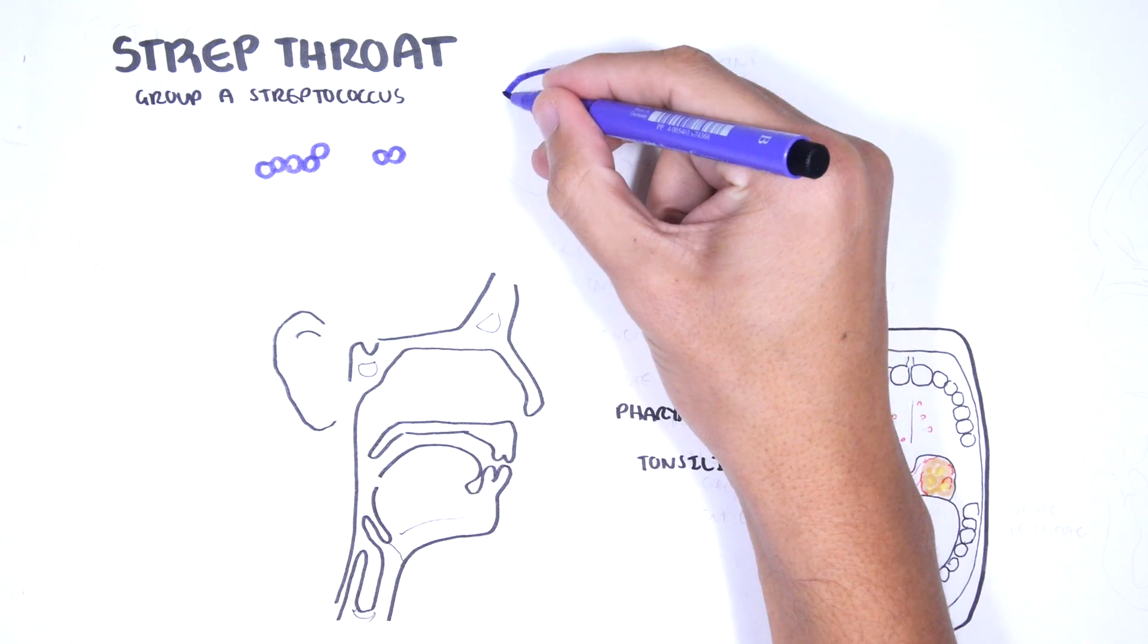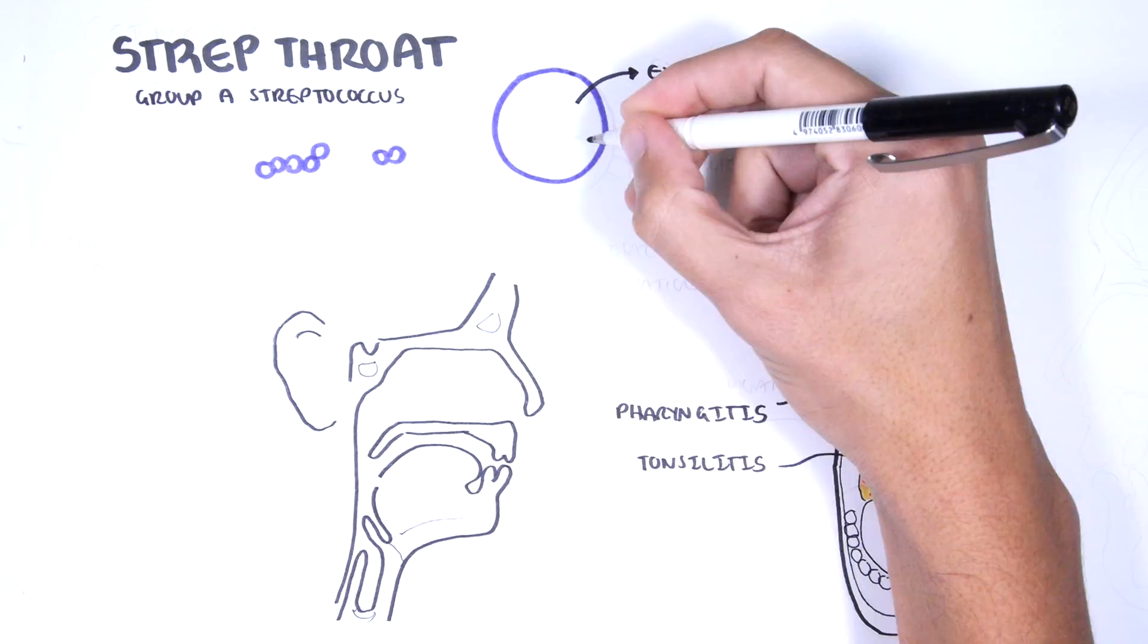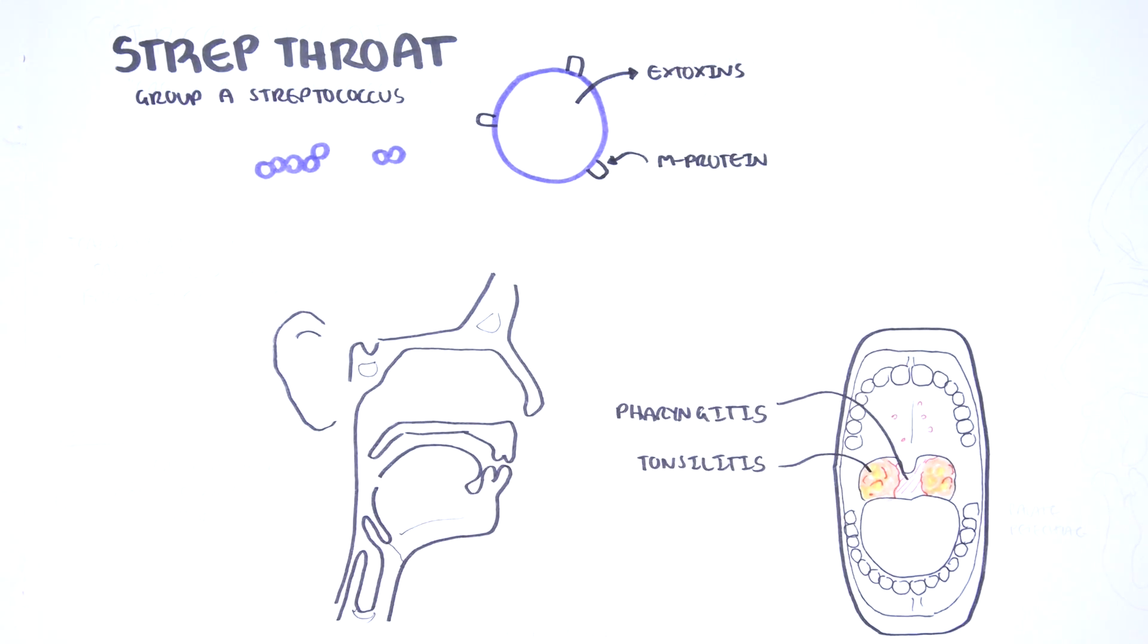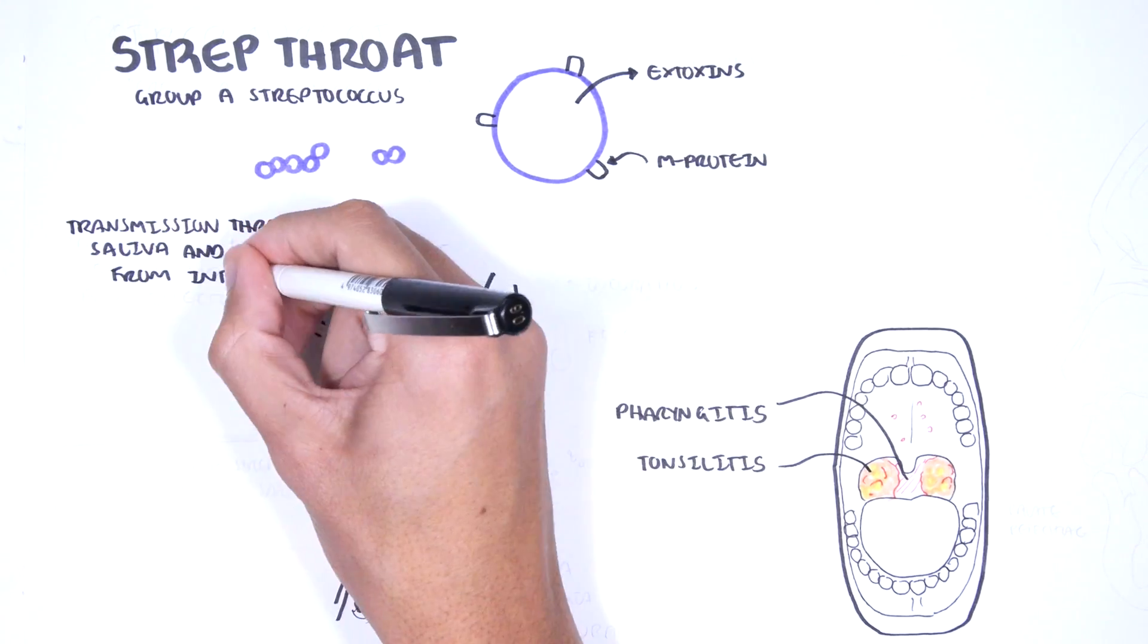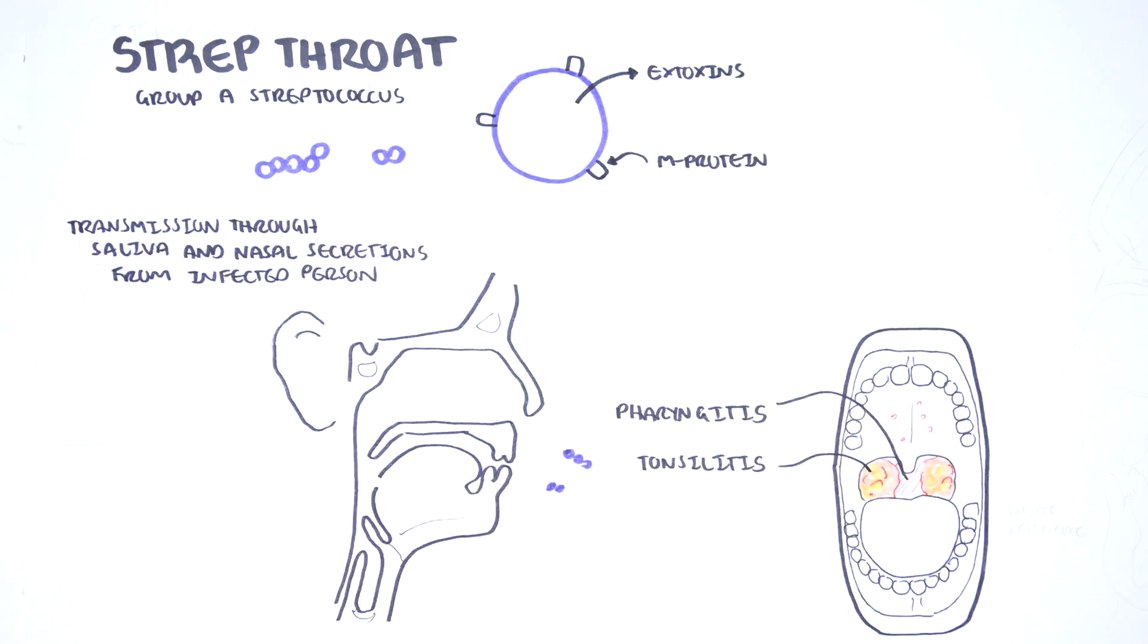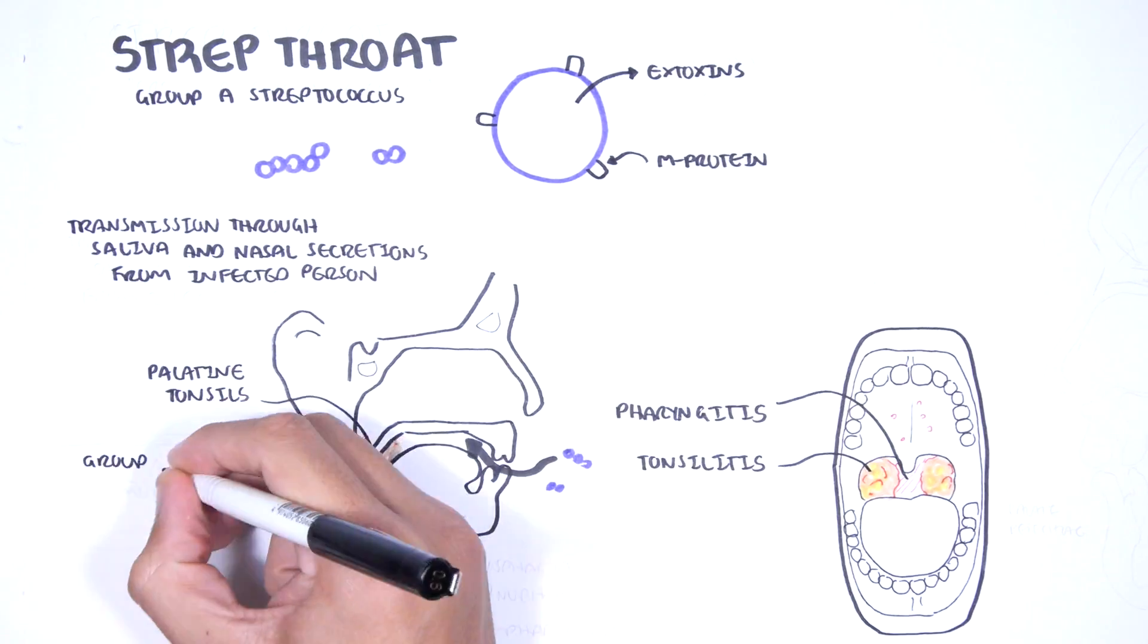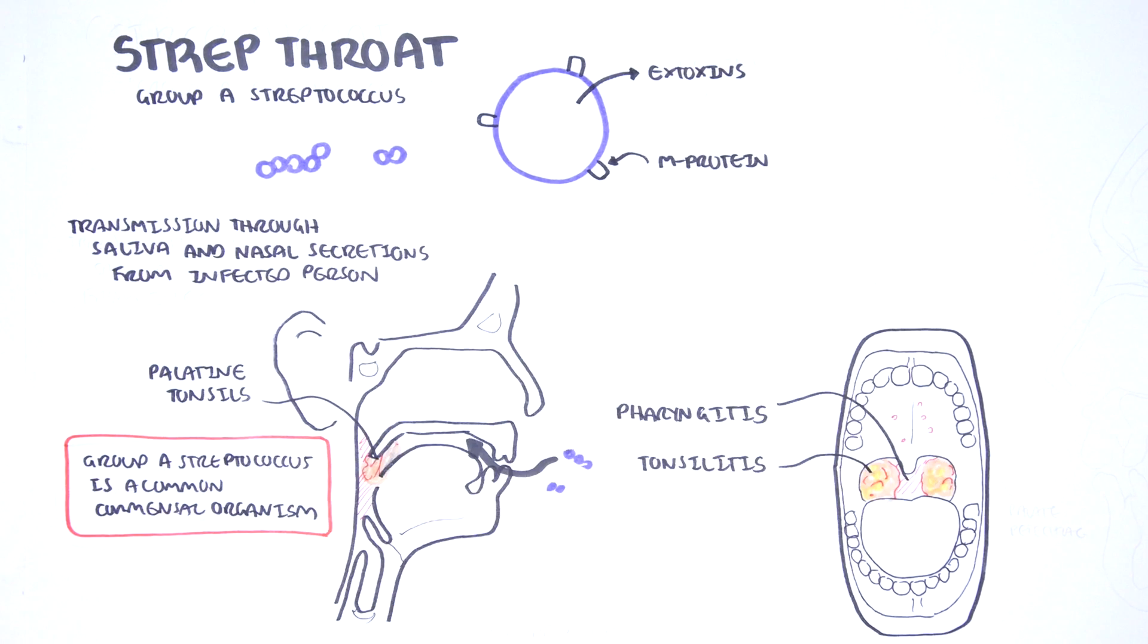The Group A Streptococcus are beta hemolytic cocci able to produce some exotoxins and also contain many surface antigens that play a vital role in the pathophysiology, such as the M proteins. Transmission of strep throat is through saliva and nasal secretions from an infected person. Here, Group A Streptococcus targets palatine tonsils. However, it's also important to remember Group A Streptococcus is an important commensal organism as well, meaning that a lot of people have Group A Streptococcus normally residing in their oral cavity and nasal cavity.